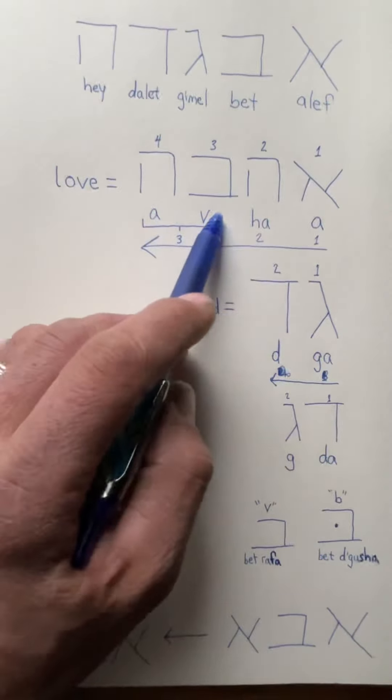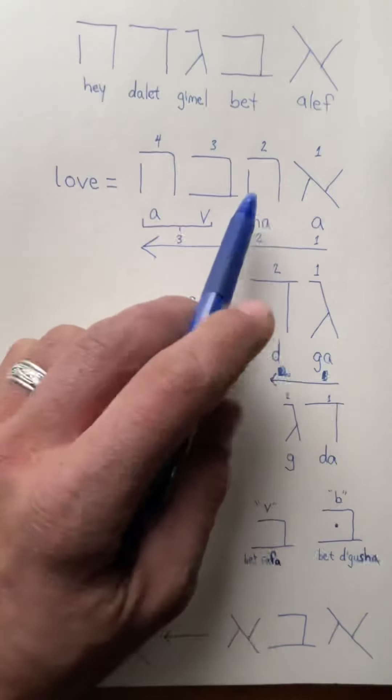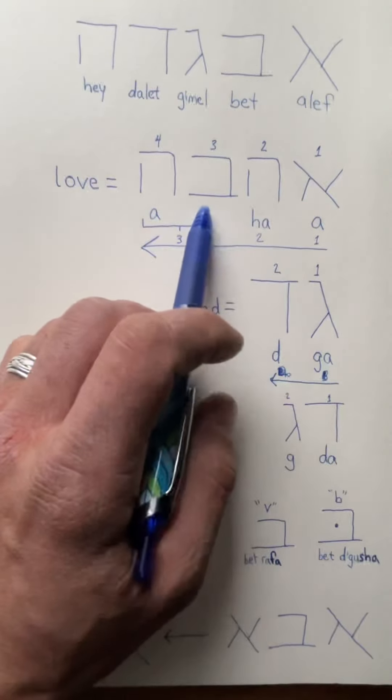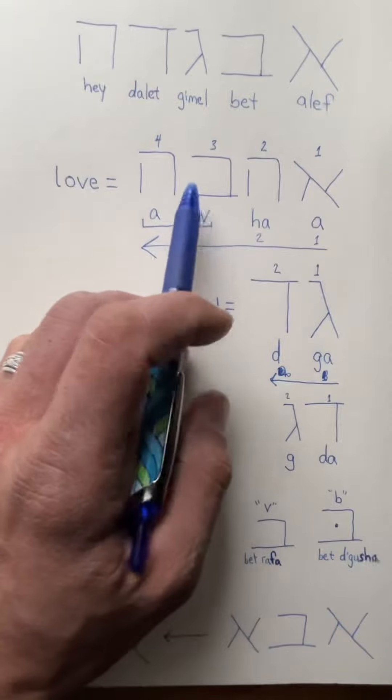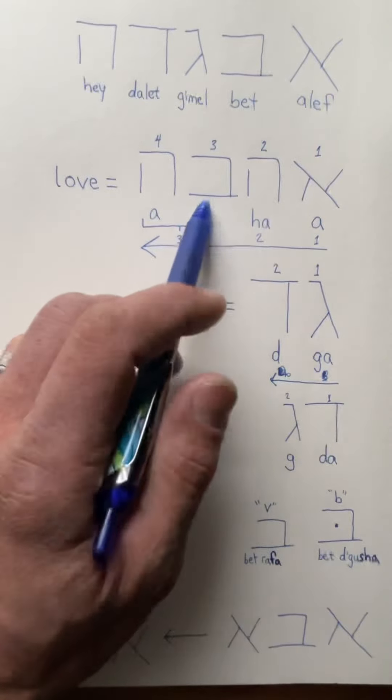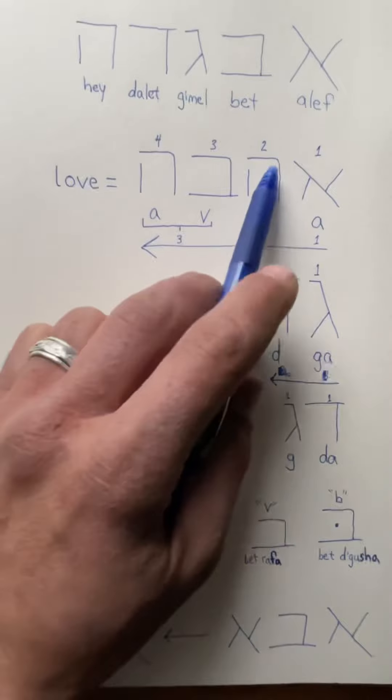That goes to First Corinthians 13, right? It says love keeps no record of wrongs. I would say love keeps no record of what is owed in a sense, and that's kind of the sense in First Corinthians 13 as well.